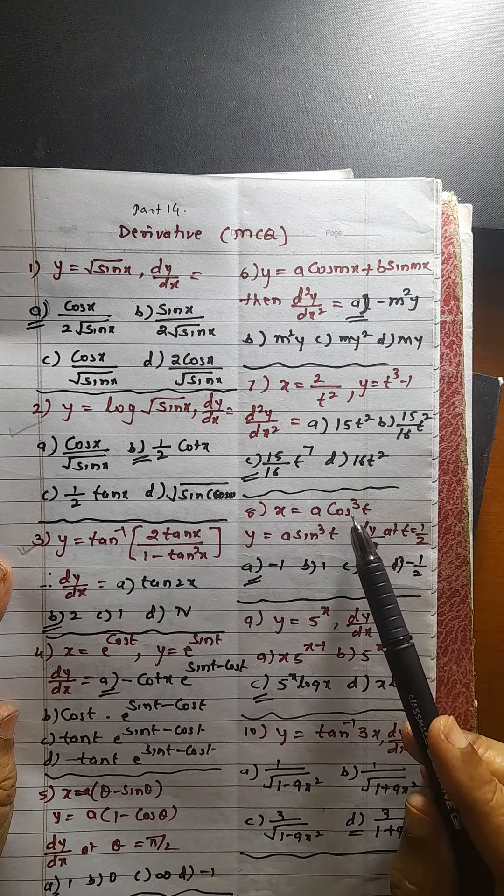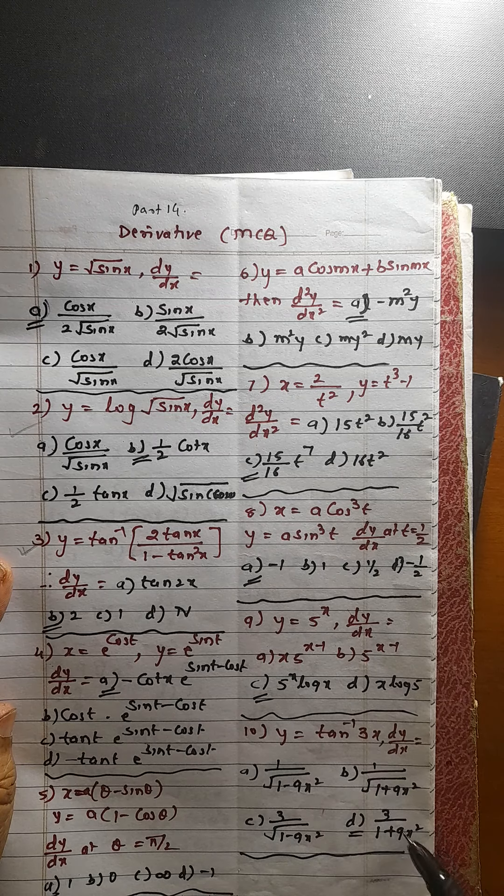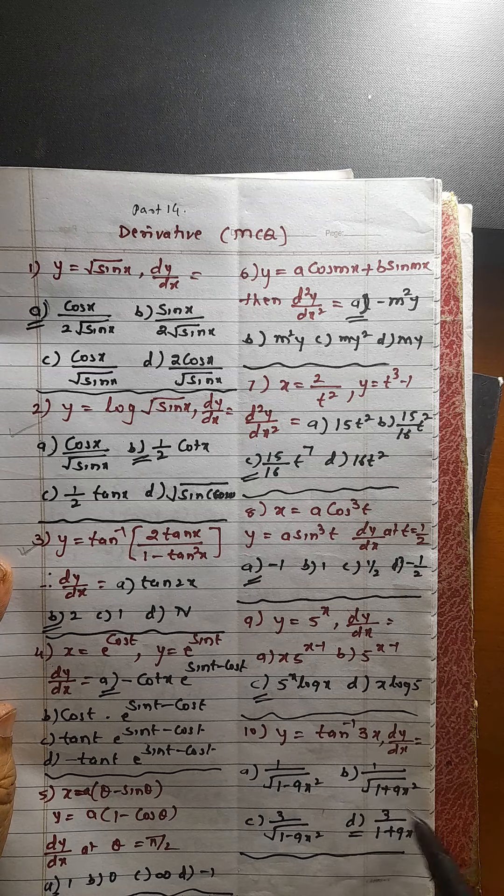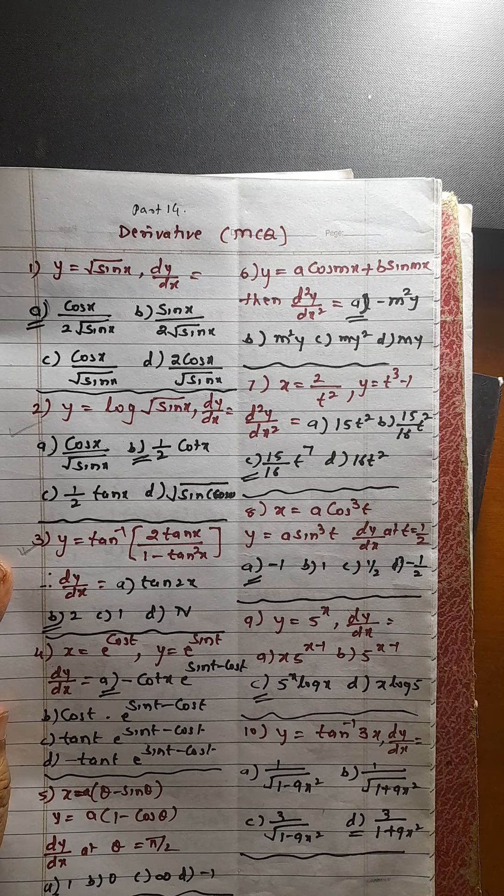This is very easy. This is very easy. Tan of 3. Tan inverse of 3x. 1 upon root of 1 minus 9x square into derivative of this bracket. It will be. Sorry. Derivative of this is 1 upon 1 plus x square. That is 9x square into derivative of this function. It is 3. This is your answer.